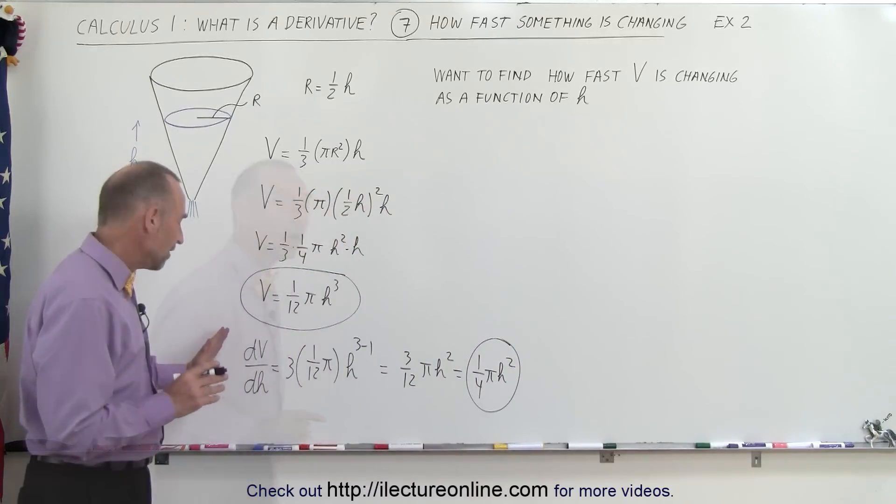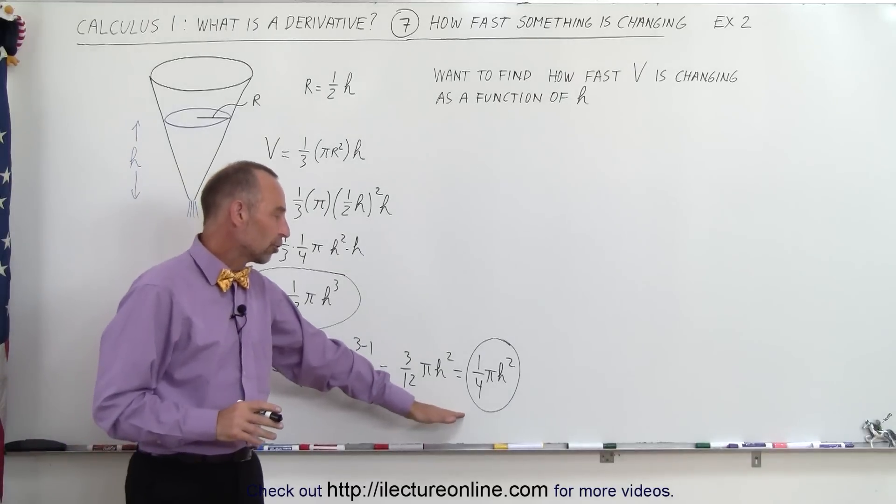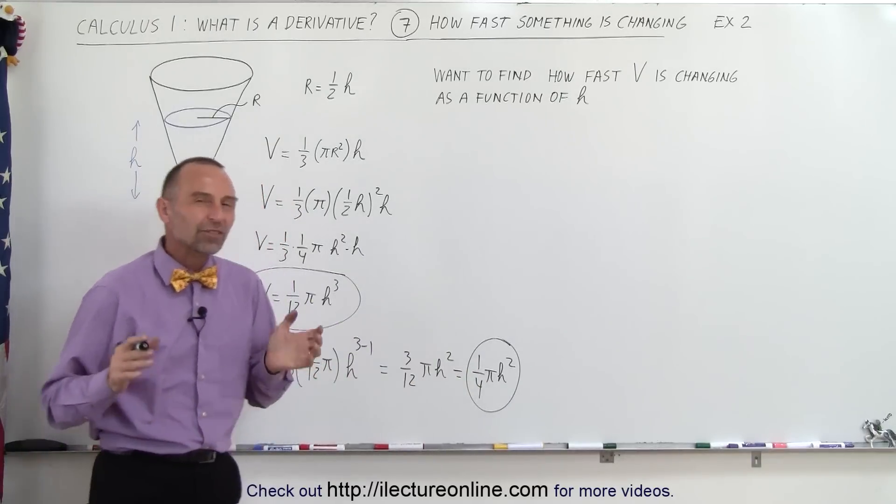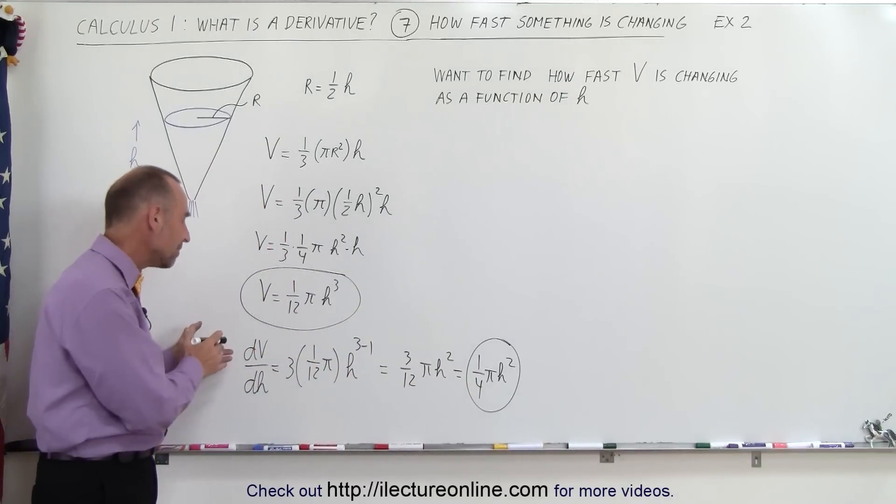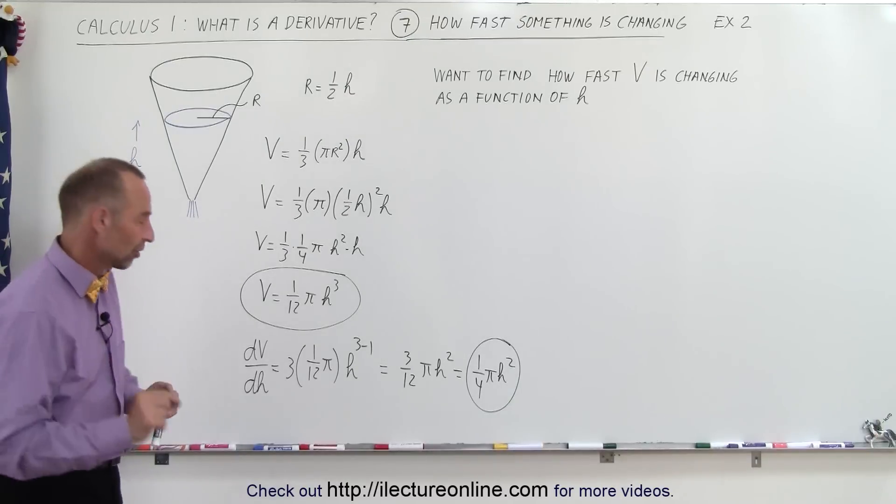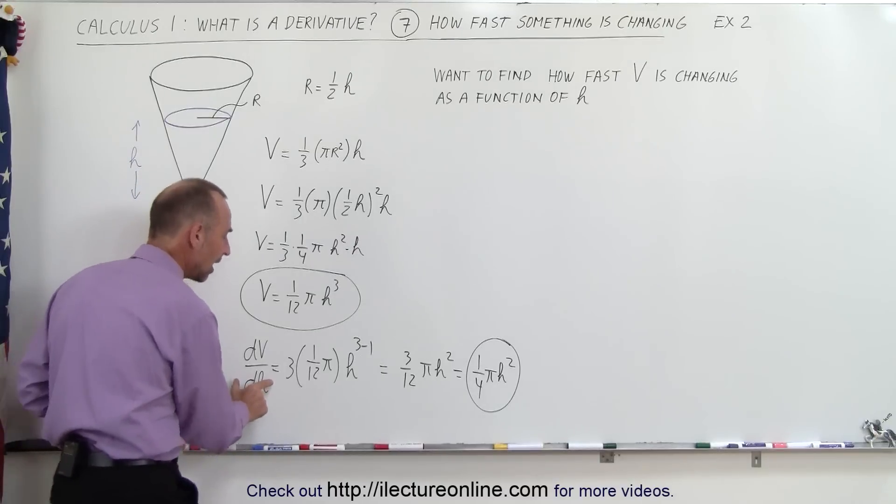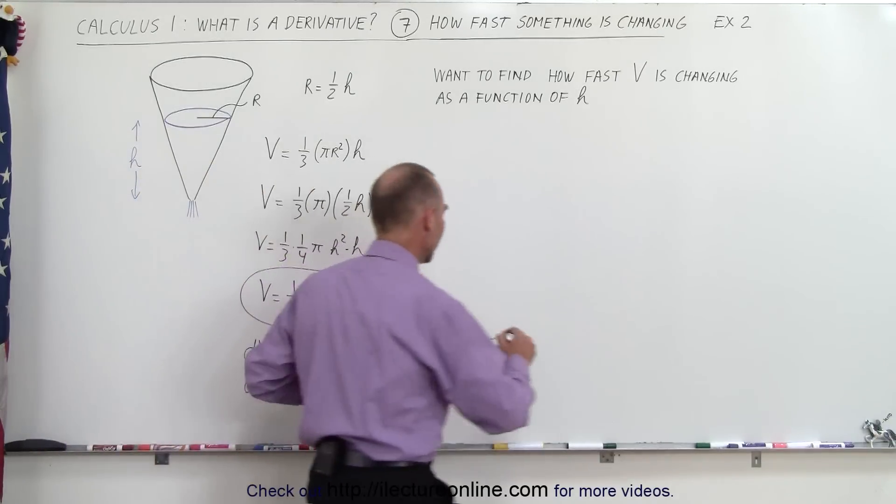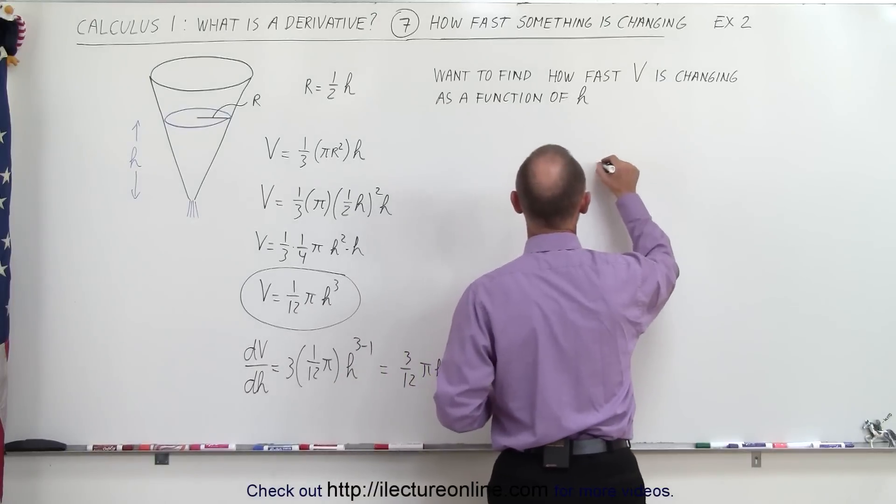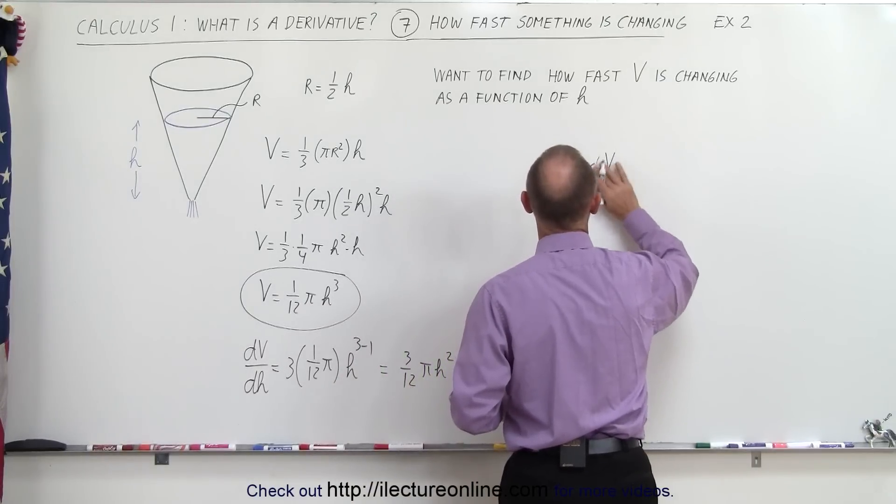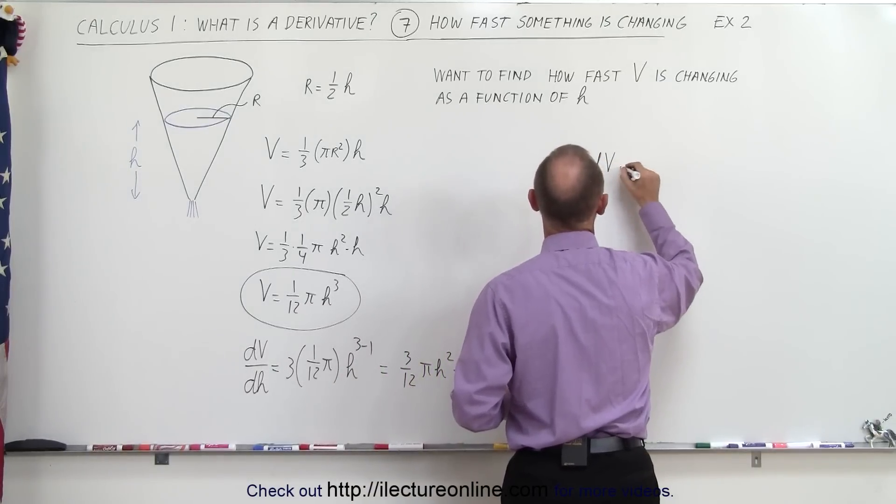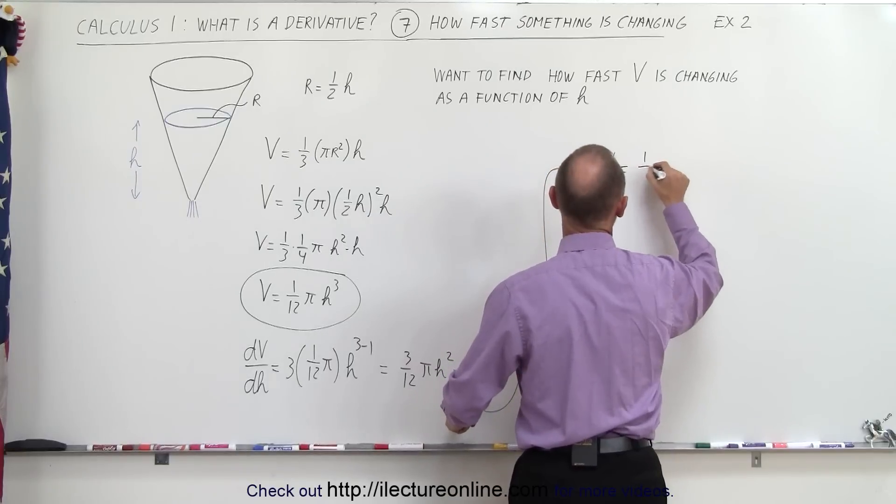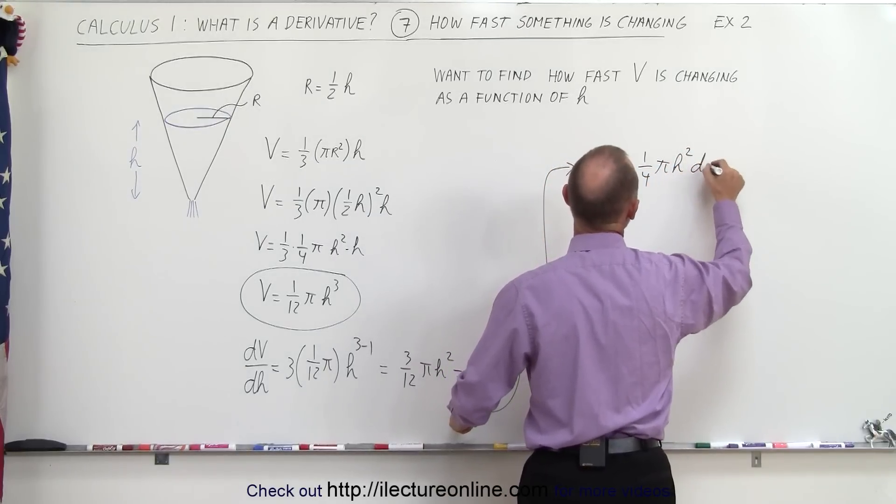Okay, so since dV/dh is the derivative of the function, which is one-quarter πh², what does that really mean? What does dV mean? What does dh mean? What I'm going to do here is something interesting. I'm going to take the dh and move to the other side of the equation and see what we get now. So this is now going to be written as follows: dV is equal to one-quarter π times h² times dh.